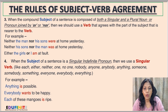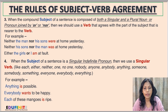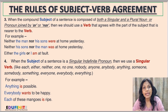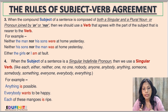Rule number four: when the subject of a sentence is a singular indefinite pronoun, we use a singular verb. These include: each, either, neither, one, no one, nobody, anyone, anybody, anything, someone, somebody, something, everyone, everybody, everything. For example: 'Anything is possible' — we use the singular verb 'is', not 'are'.